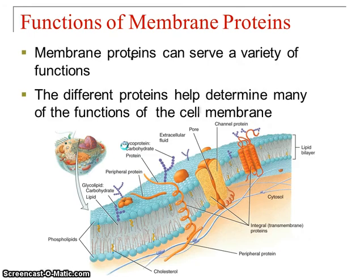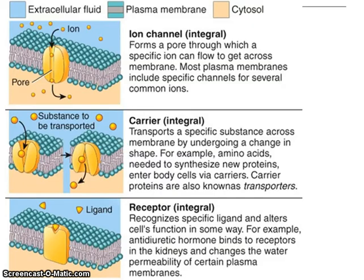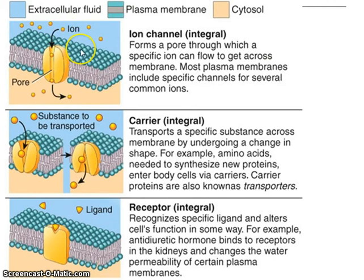We're going to look at the different types of functions that membrane proteins can have — they're very important for cell function. Based on the proteins on the outside of the membrane, you can have different types of receptors and different channels. The first type is an ion channel: a water-filled space that goes all the way across, very specific to a certain ion. Examples include sodium channels, potassium channels, chloride channels, and calcium channels — ions that can't cross through the plasma membrane on their own but can now move through the channel.